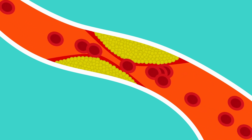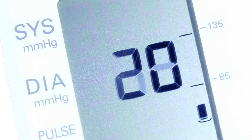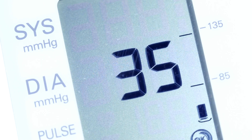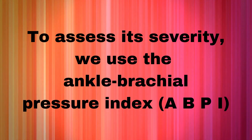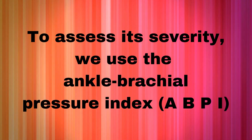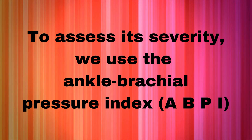In peripheral vascular disease, atherosclerosis affects the femoral arteries, reducing blood flow to the lower limbs. Therefore, blood pressure taken in the ankle is lower than that recorded in the arm. To assess its severity, we use the Ankle Brachial Pressure Index, ABPI.